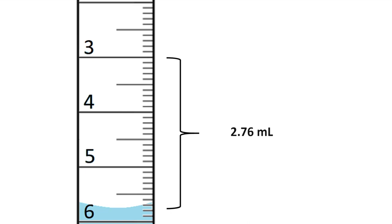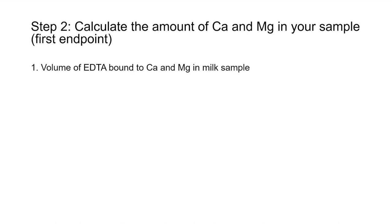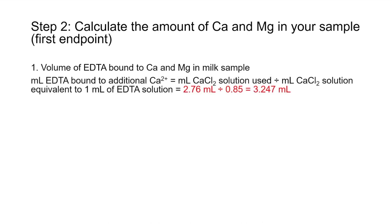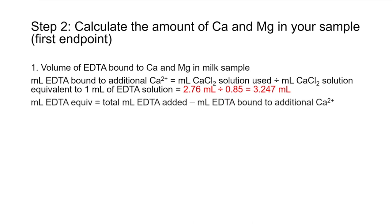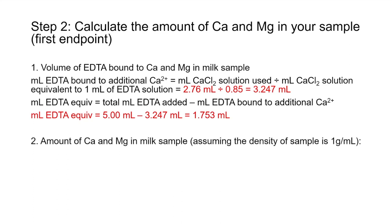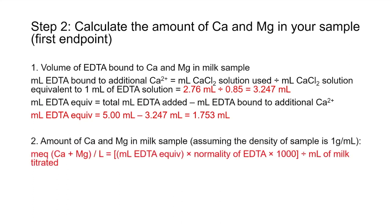Although some additional calcium ions do replace magnesium in the binding with EDTA, the amount is very small, so you do not need to take that into account when performing the calculations. To start the calculation, you first need to know how much EDTA is bound to calcium and magnesium in the sample. Calculate the amount of excess EDTA by dividing the volume of calcium chloride solution used by the amount of calcium chloride equivalent to 1 milliliter of EDTA solution, then subtract this value from the total amount of EDTA used. Now you can use the following equation to calculate the total amount of calcium and magnesium in your sample, in units of milliequivalents per liter.